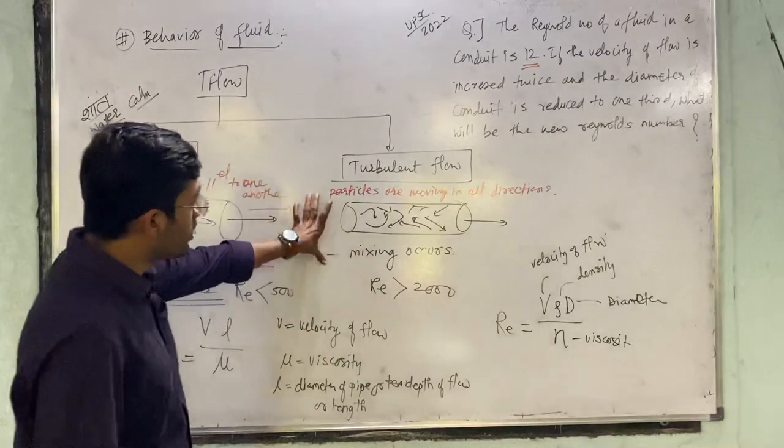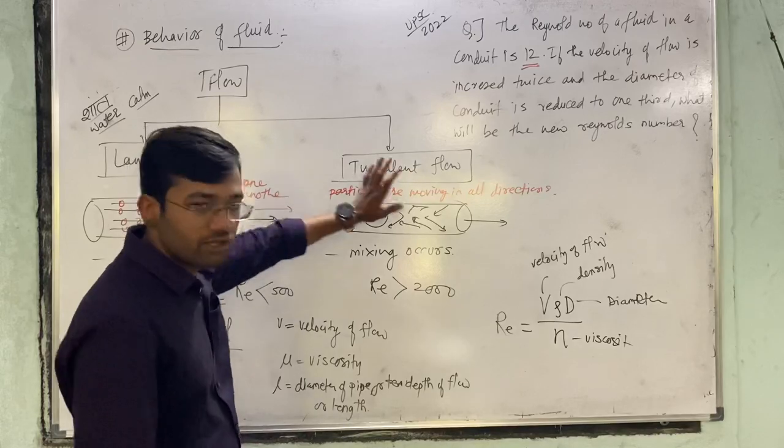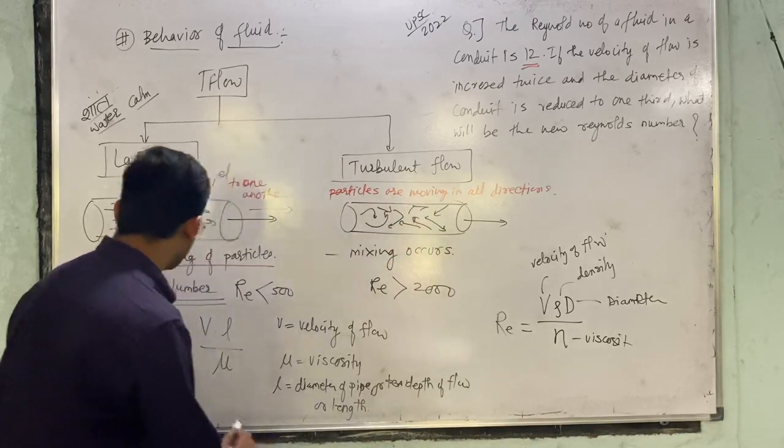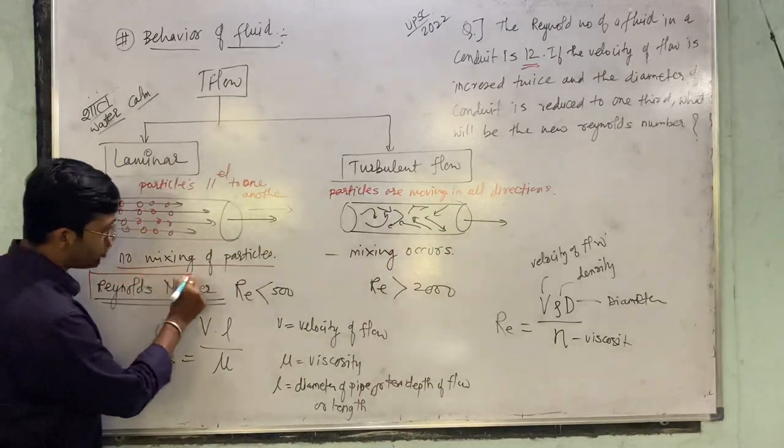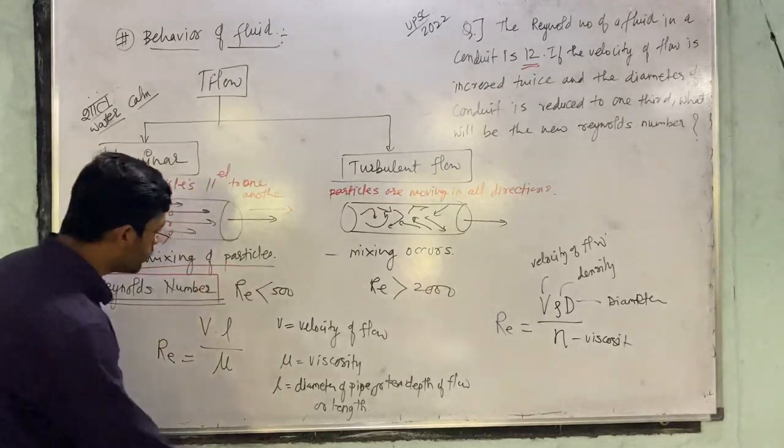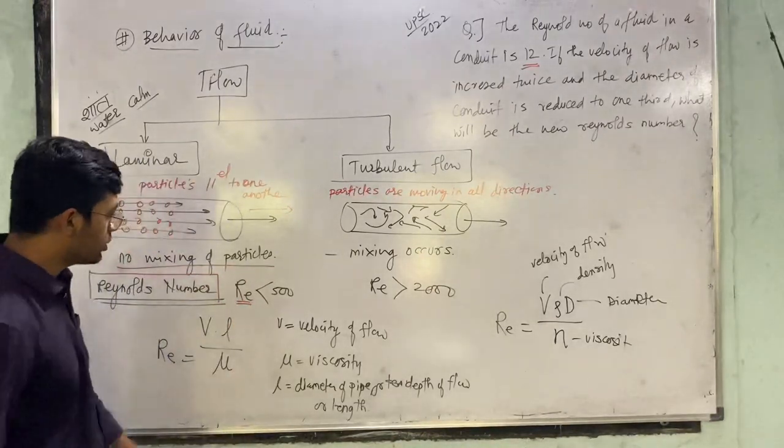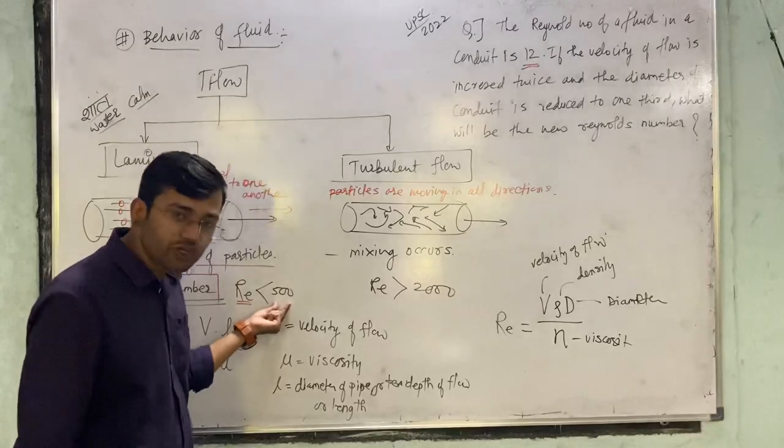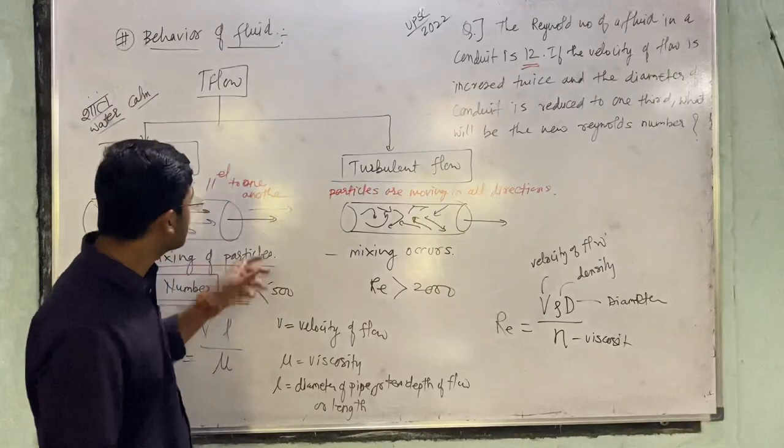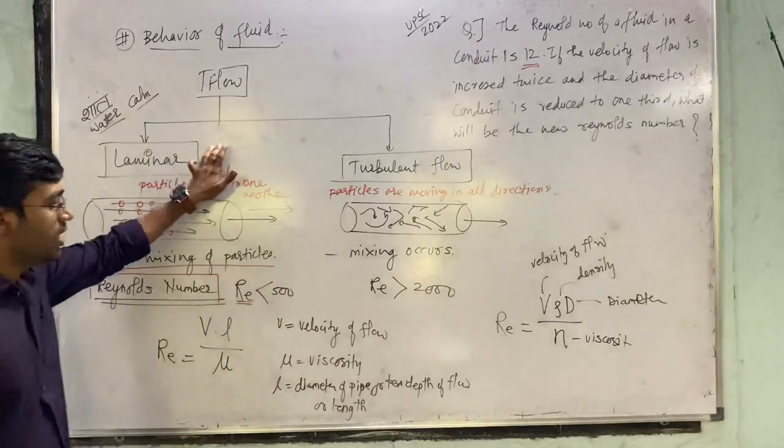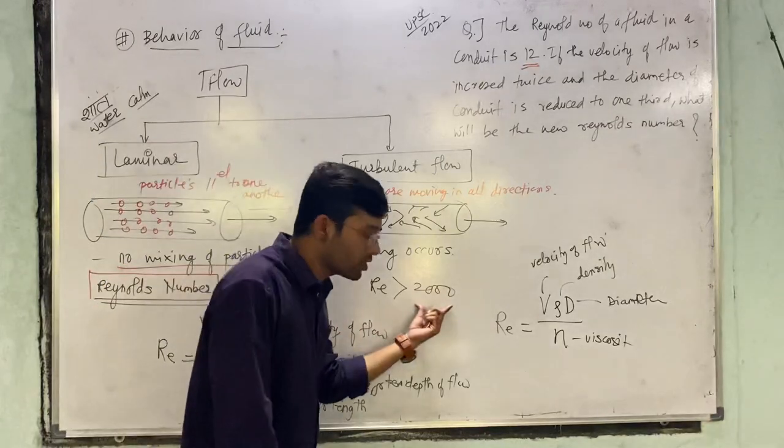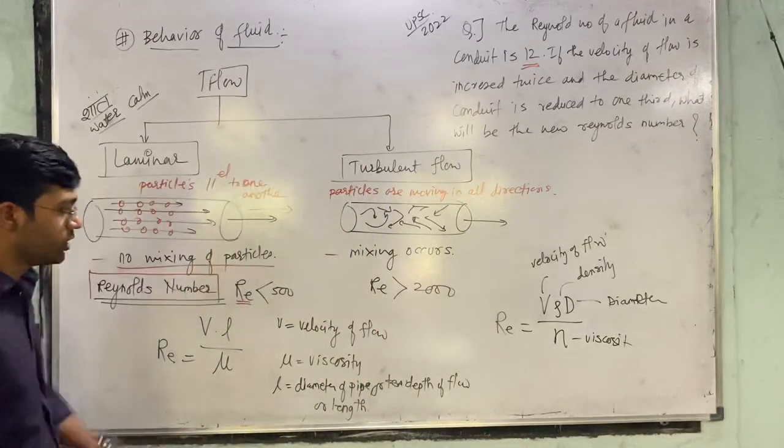Now, to classify between laminar flow and turbulent flow, we have one important parameter: Reynolds number, denoted by R. If the value of Reynolds number is less than 500, the flow is laminar. If the value is more than 2000, the flow is turbulent.